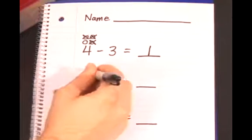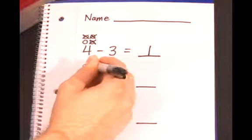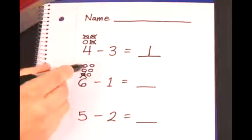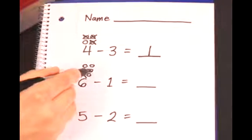Again draw six and then don't draw anything for one. Instead, how many do we take away? One. Count how many are left with your pencil tip. One, two, three, four, five.